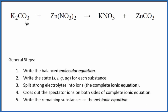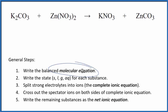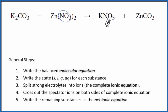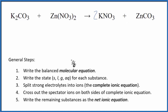In this video, we'll balance the net ionic equation for potassium carbonate plus zinc nitrate. First, we need to balance the molecular equation. I can see I have two nitrates here and only one here, so I'm going to put a two as my coefficient. That also balances the potassium. Everything else is balanced, so we've got our molecular equation.